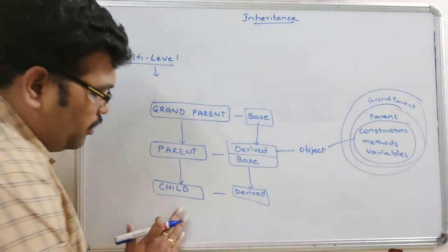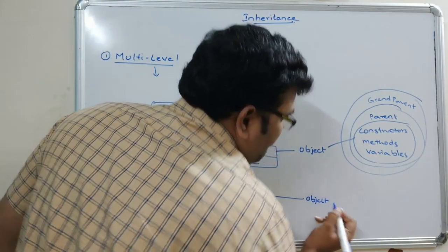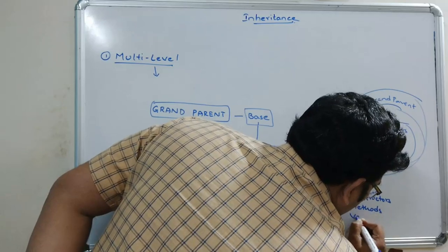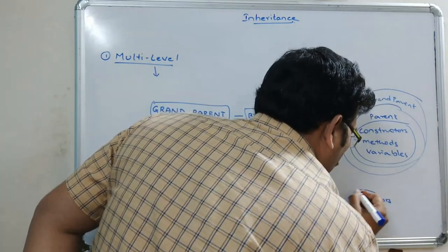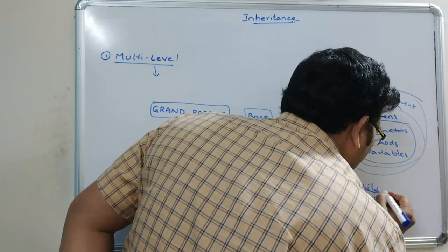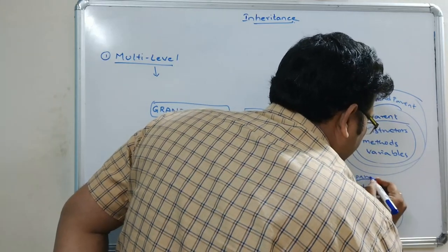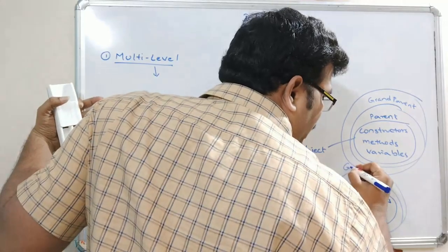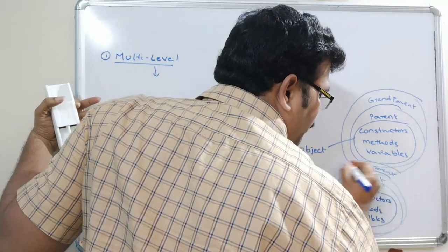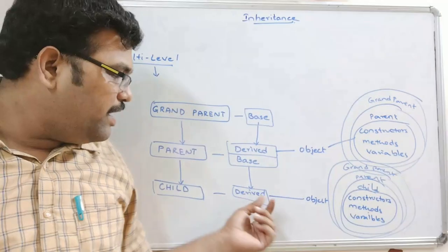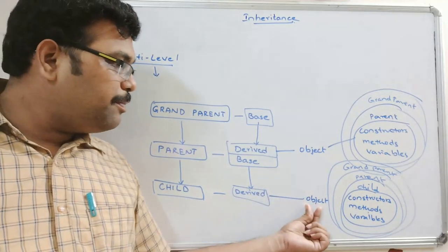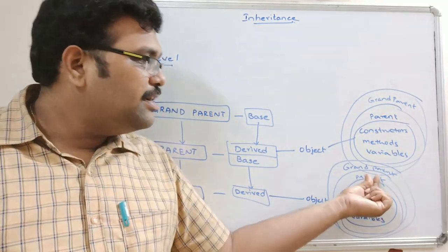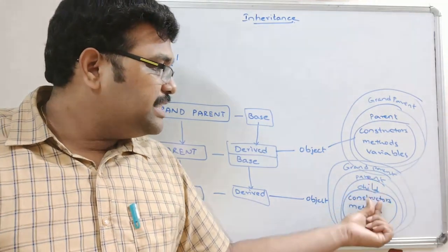If you create an object for the child class, through that object you can access constructors, methods, and variables of child as well as parent. And since parent is also acquiring the properties of grandparent, the child object can also access the variables, methods, and constructors of grandparent.